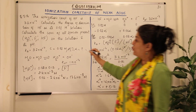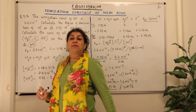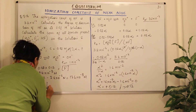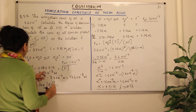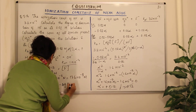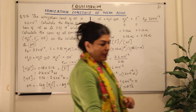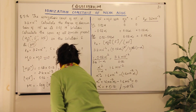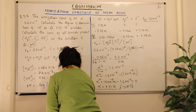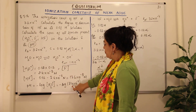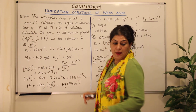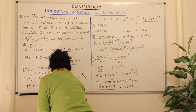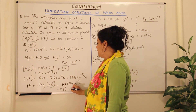The last part of the question asks for the pH. pH = −log[H3O⁺] = −log(2.4×10⁻³) = −log(2.4) − log(10⁻³) = −log(2.4) + 3. Calculating this gives pH = 2.62.